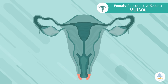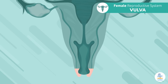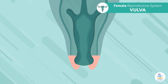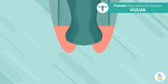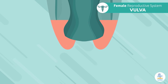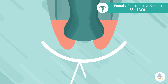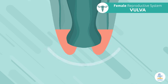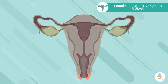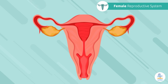The vulva: the vulva is made up of the external organs of the female reproductive system. The vulva is mainly responsible for protecting the openings from damage by the exterior. How interesting!